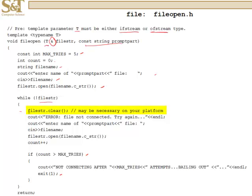We'll start by clearing the fail bit, so we can attempt again. Output an error message, prompt, read in the file name, attempt to connect, increment count, and then ask, is count greater than max tries? If it is, we send out an error message and then exit. And this will loop until the connection is made.